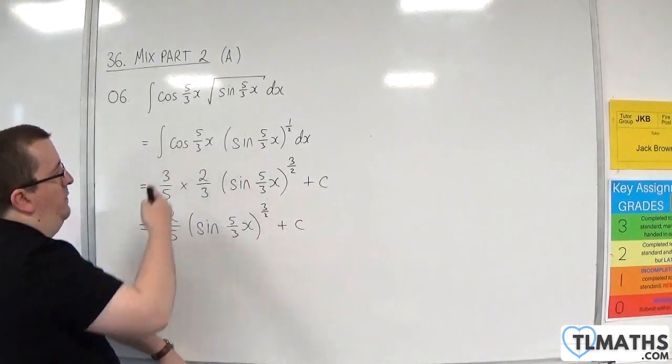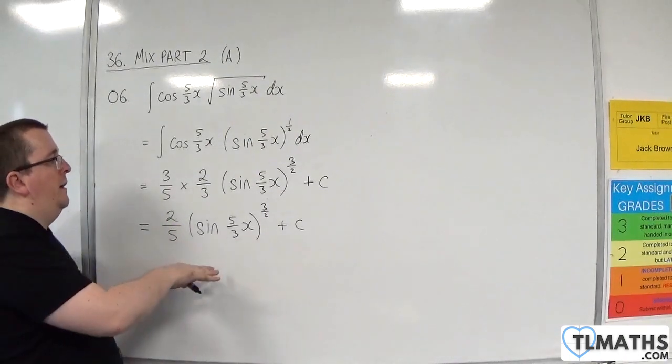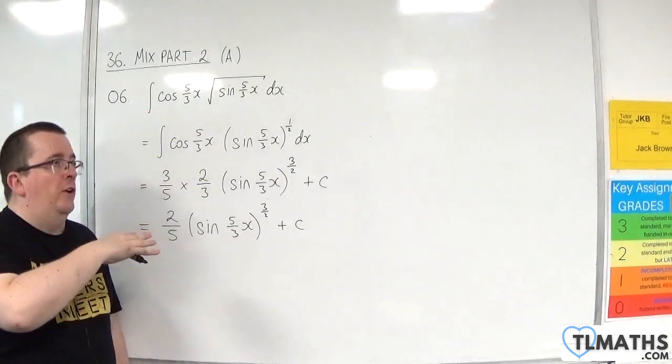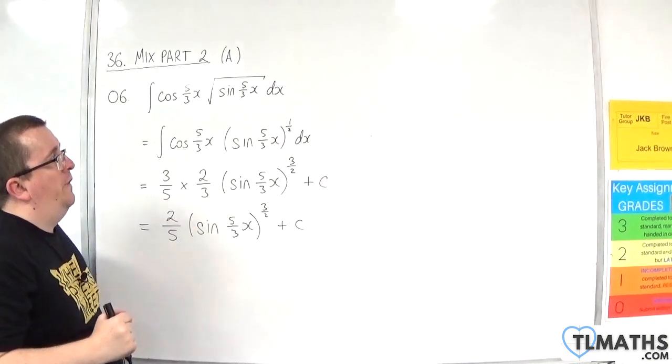And we'll have a cosine 5 thirds x out the front. So differentiating back using the chain rule should all work out. Again, you can do this one if you're a bit hesitant on it. Try it by substitution.